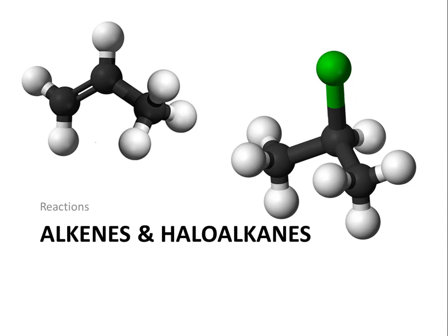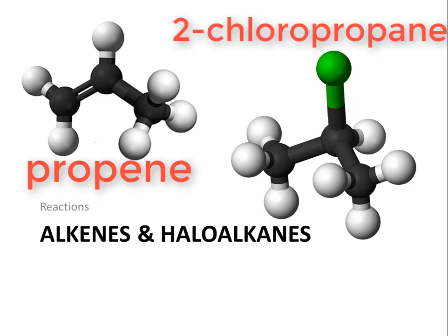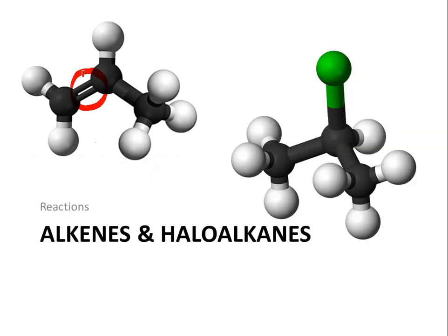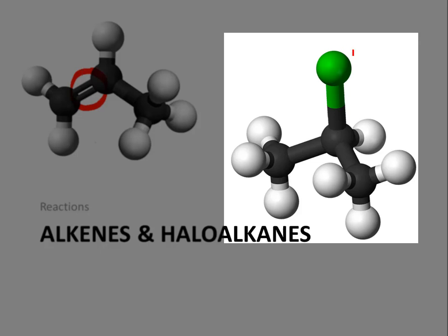How do alkenes and haloalkanes compare with one another, and how do they react to convert one into the other? Looking at propene and 2-chloropropane, two differences are obvious: the alkene has a double bond, which is absent in the haloalkane, and the haloalkane has a halogen atom.